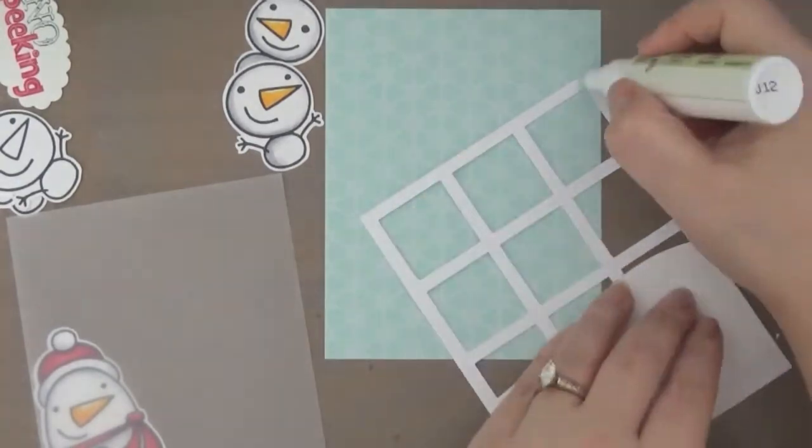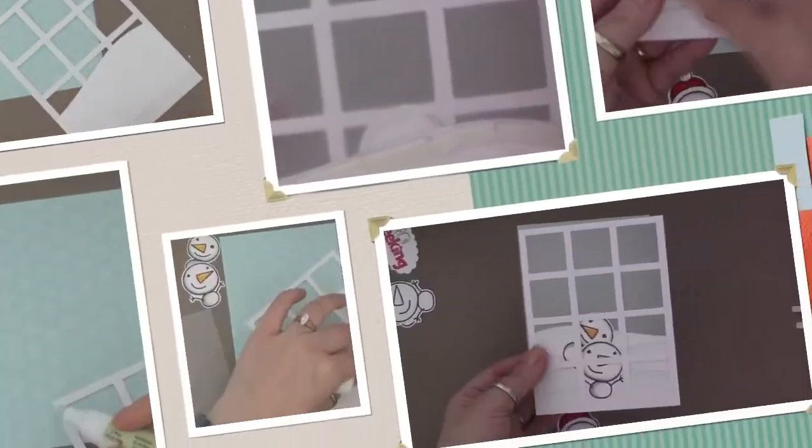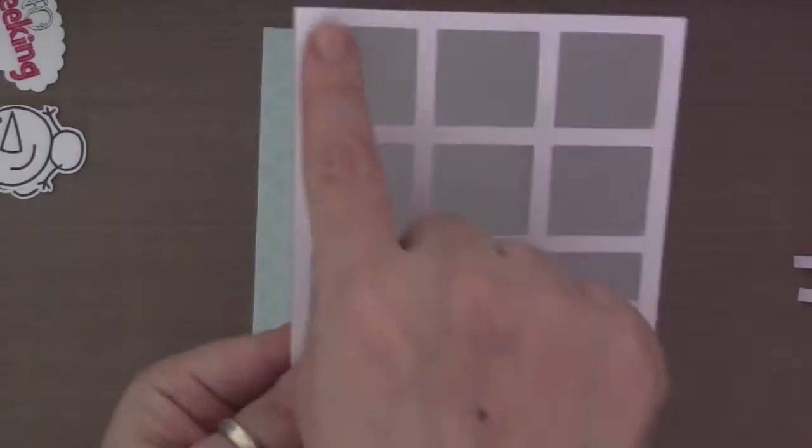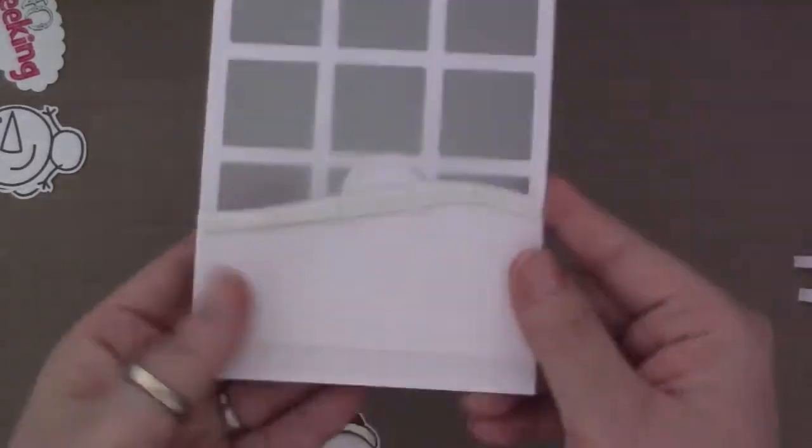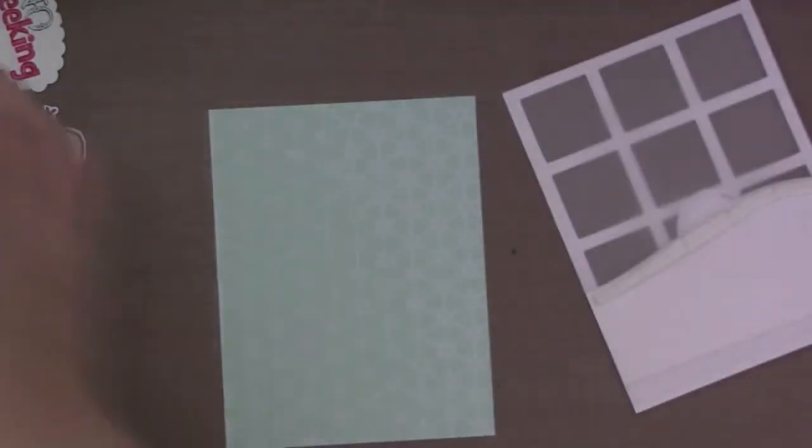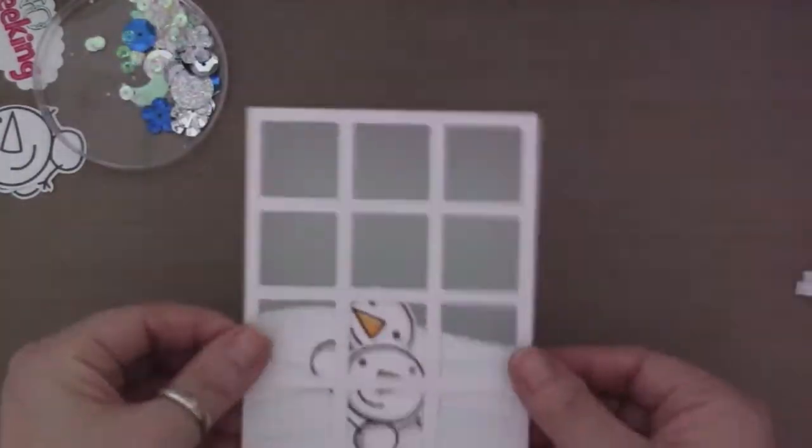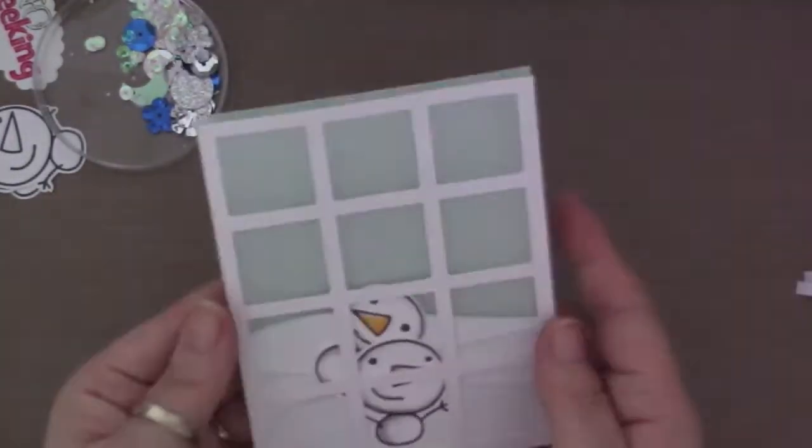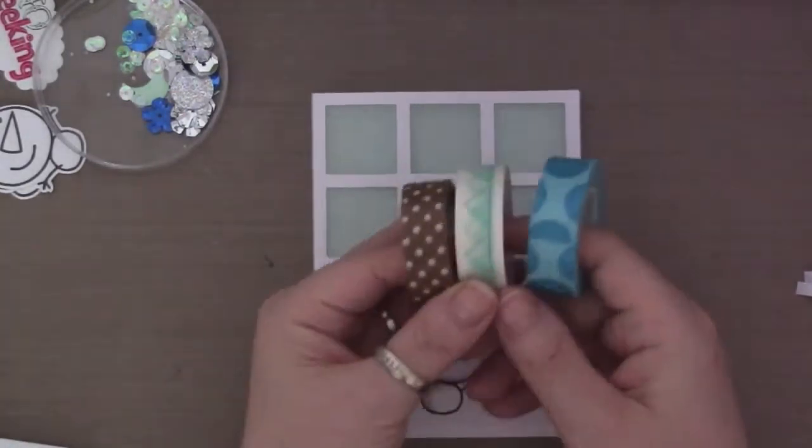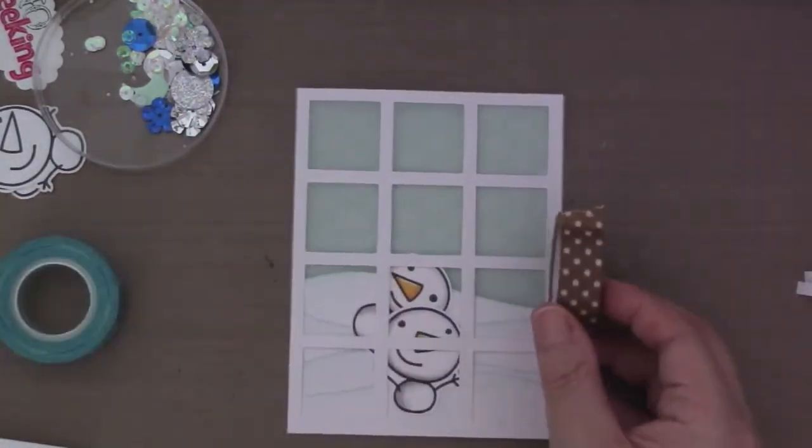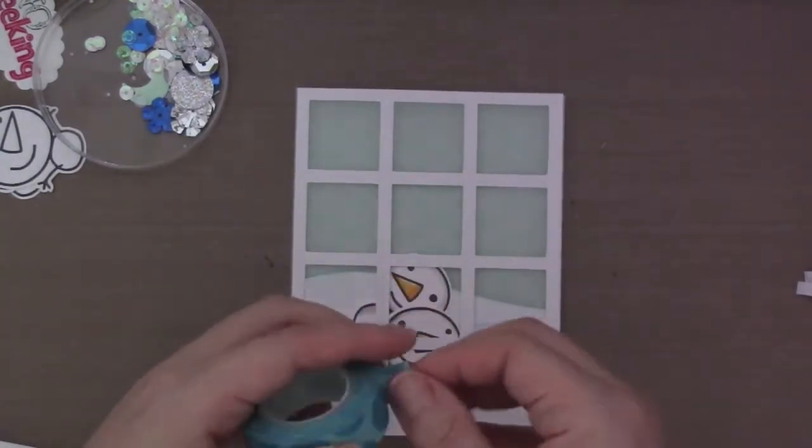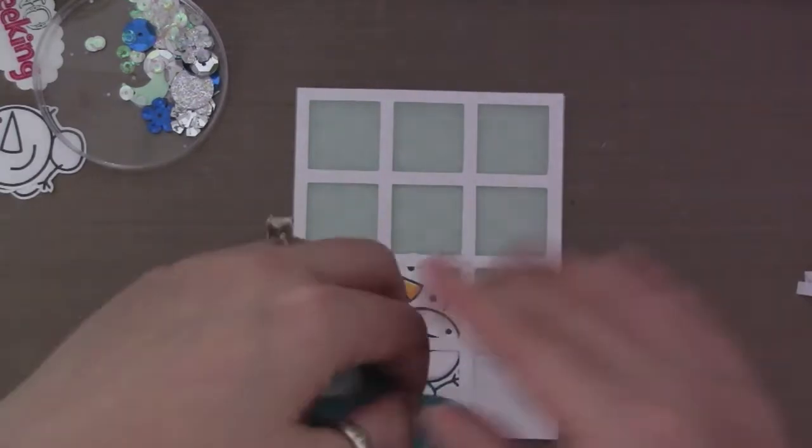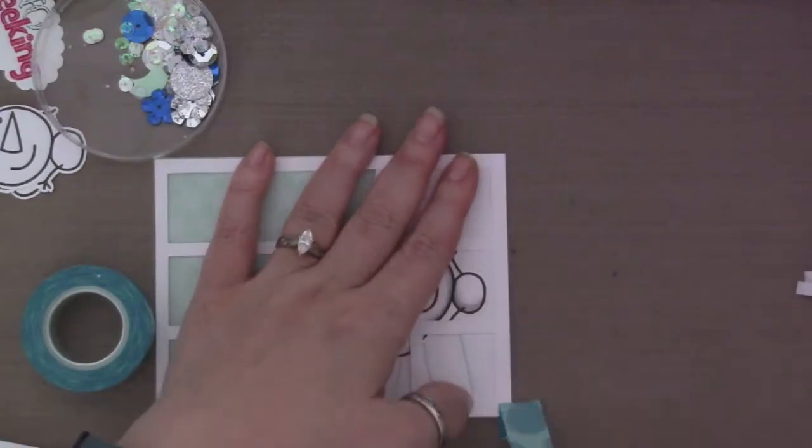So here I'm putting some adhesive on this to attach to the vellum. Sorry you missed the part. My camera died and I didn't know. So what I did was I put the snowmans behind the window, and then I attached the vellum. And then I put foam adhesive just along the top portion of the last snowbank that you see in the back, just to give a slight dimension.